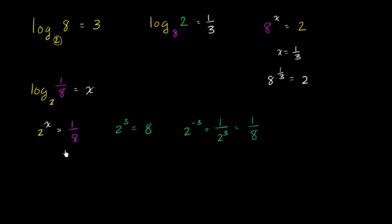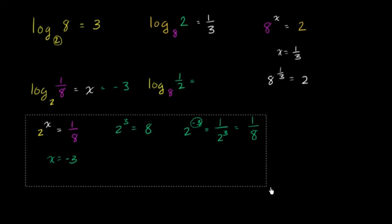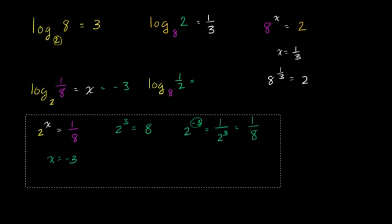So you can see the exponent of 1 over 8 equals negative 3. So x equals negative 3. You can see the exponent of 1 over 8 equals negative 3. Now the exponent of 1 over 8 equals negative 3. So we can see the exponent of 1 over 8 equals negative 3. Again.